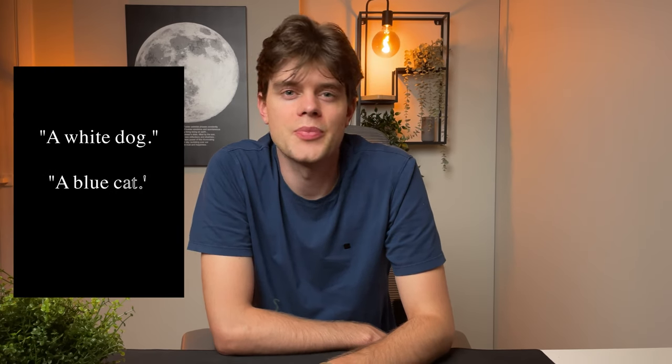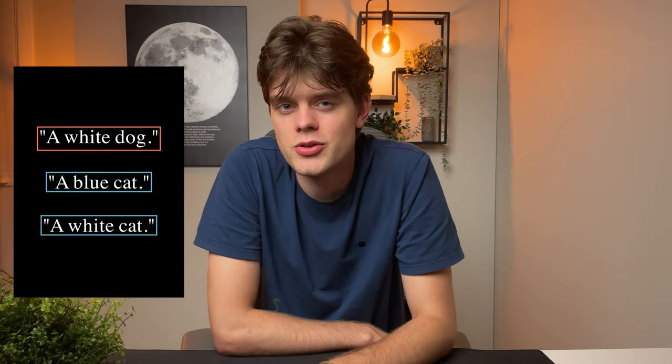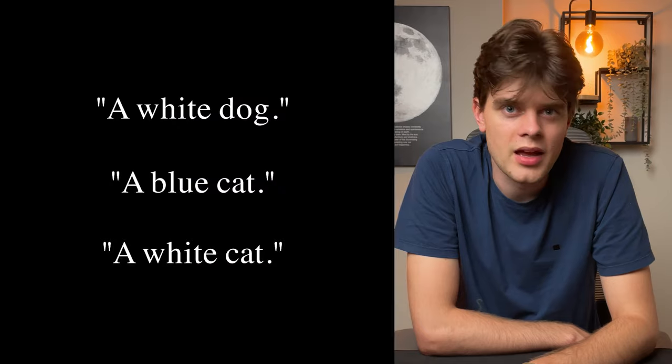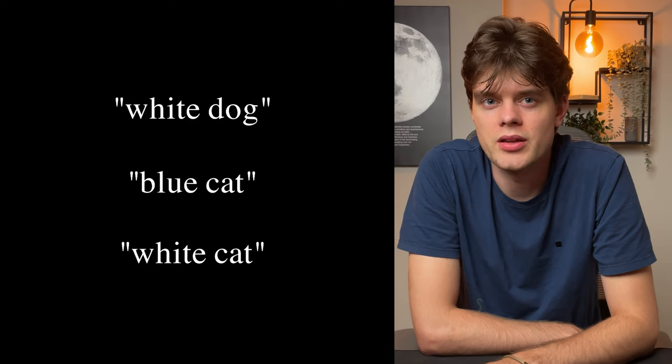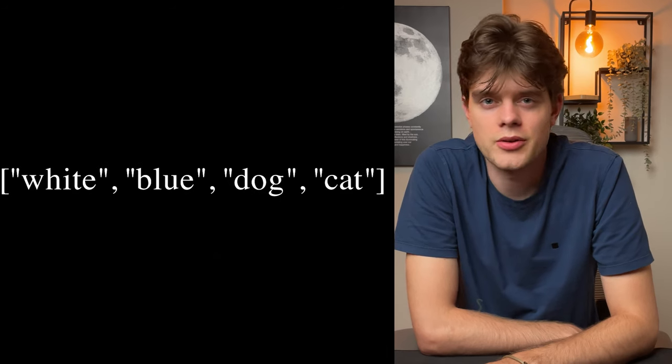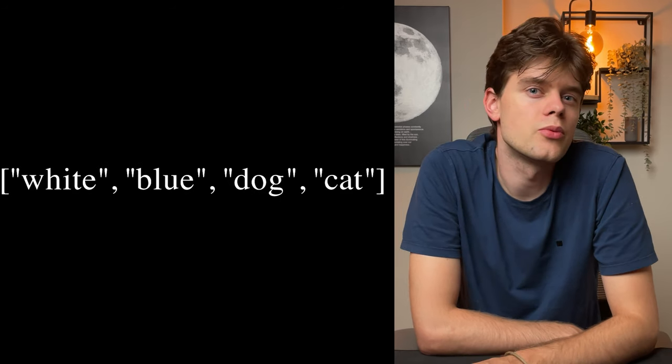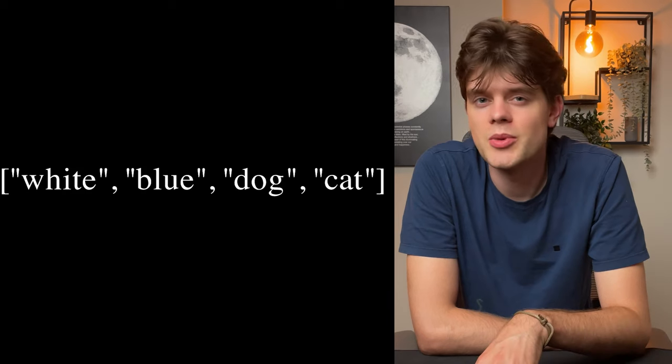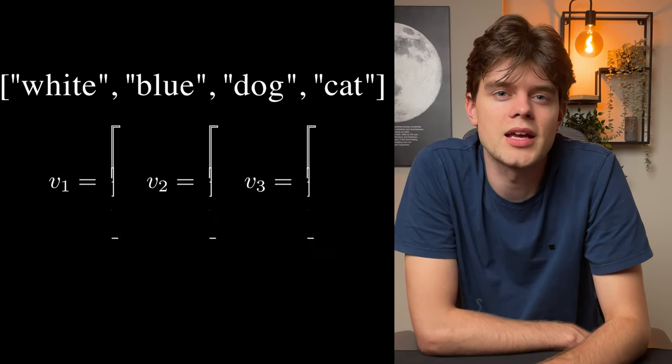Let's take a look at a very simple example. We have three text strings: a white dog, a blue cat, and a white cat, and we want to calculate the cosine similarity between the first text string and the other two. We need a way to vectorize these strings, and one of the simplest ways is to use the bag of words method. First we clean our data by removing any punctuation and stop words. Next we create a vocabulary of all unique words in our dataset, and every word will represent a dimension. Each dimension will correspond to the frequency of that word in a text string.